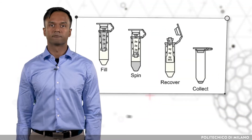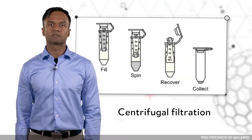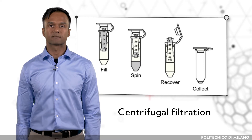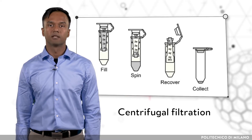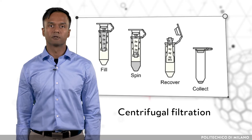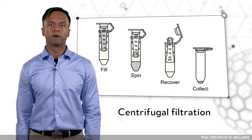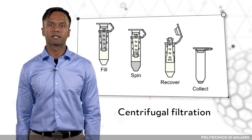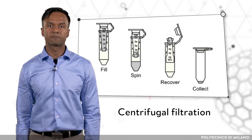In centrifugal filtration, the separation is achieved by centrifuging the sample through a filter with a specific mass cutoff. The centrifugal force helps the filtration process by pushing masses lower than the cutoff through the filter, while retaining the desired product on the filter.